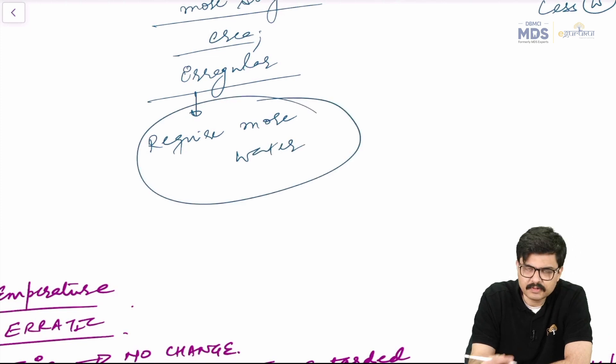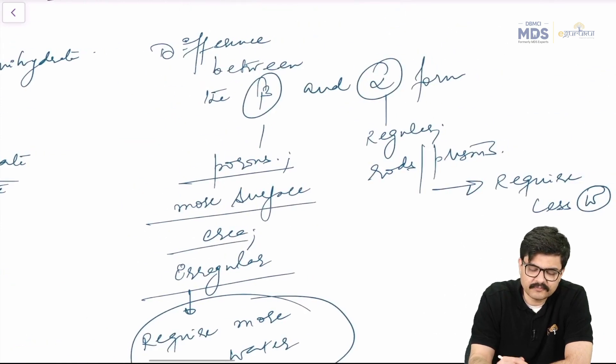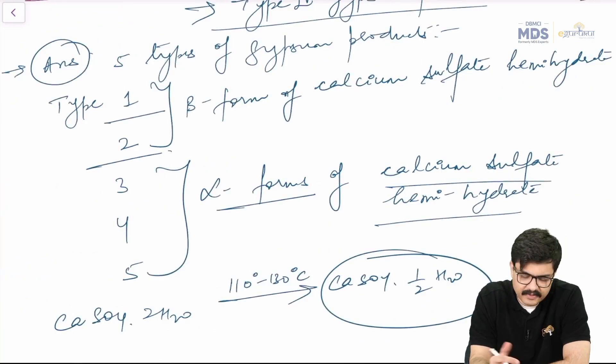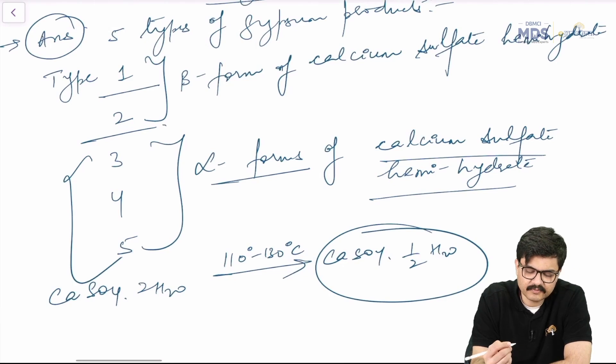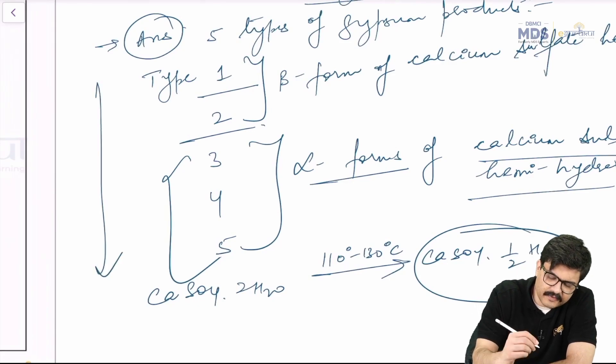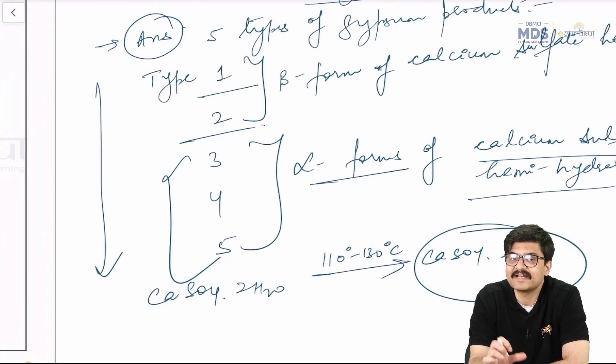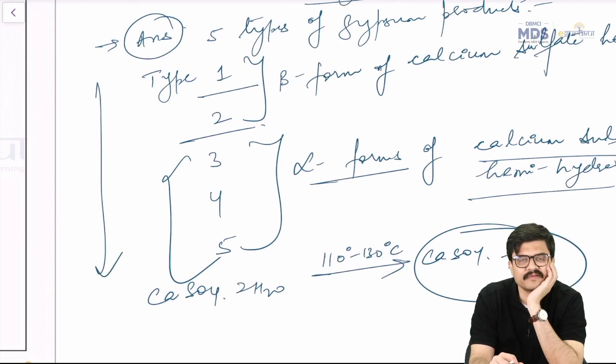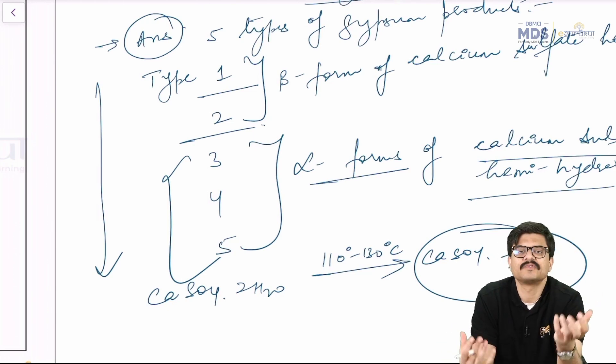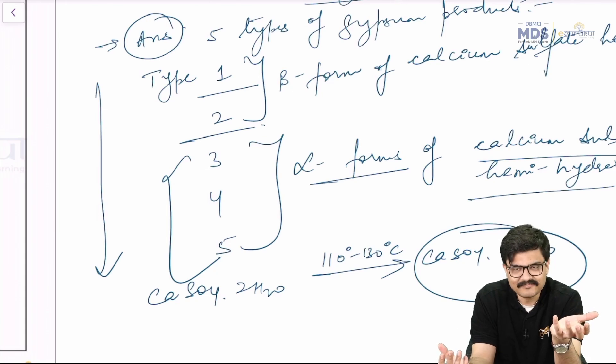So in general, for beta forms, that is type 1 and 2, the water powder ratio is higher, type 3, 4, 5, the water powder ratio is lower. And actually, this is the order that is followed. So when you move from 1, 2, 3, 4, 5, the water powder ratio keeps on decreasing. Because the requirement of water is less. And when the water powder ratio keeps on decreasing, means the strength properties, the hardness keeps on increasing.